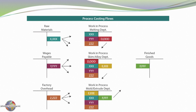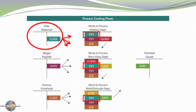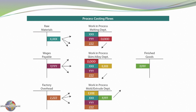Now, with process costing, it actually looks somewhat similar in terms of the basic structure, but notice that the costs are not accumulated by job — they're instead accumulated by process. So this production process involved a melting department, then a skimming and alloy process, and finally a molding and extruding department. The cost transfer is much the same. For the materials, as they are injected into production along the way, we credit our raw materials inventory and debit the appropriate work-in-process account for the department into which the material was injected. We do the same for wages and overhead. As work is completed within each process, the cost is transferred to the subsequent activity — from the melting department to the skim-alloy department, then into the mold-extrude department. Finally, the finished goods coming out of the last production activity are recorded by crediting that last work-in-process account and debiting the finished goods inventory account, as shown in this illustration.